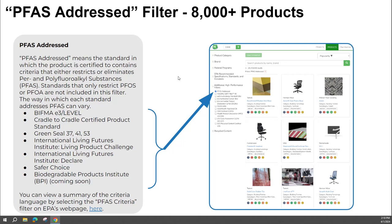Each eco-label listed here — whether it's BIFMA level, Cradle to Cradle, Green Seal 37, 41, and 53 (not all of Green Seal, just those specific ones) — as well as the others actually address PFAS in their system. It's a way of limiting that forever chemical set of PFAS that we want to eliminate from our supply chain and products, and it's usable to you immediately.